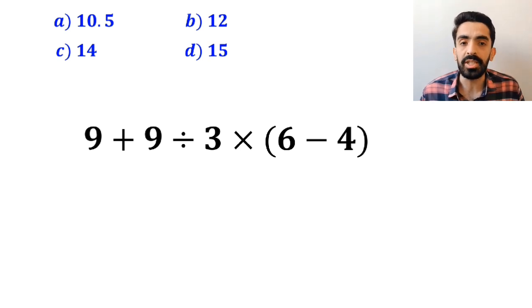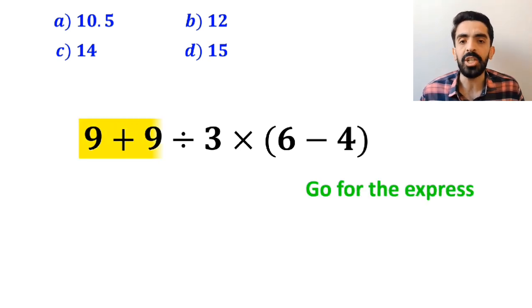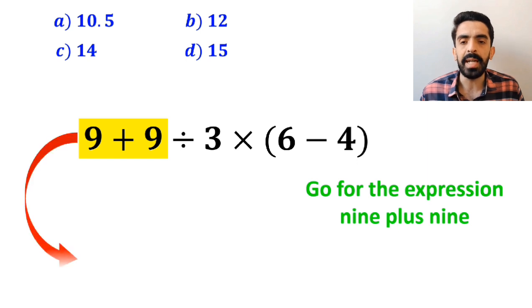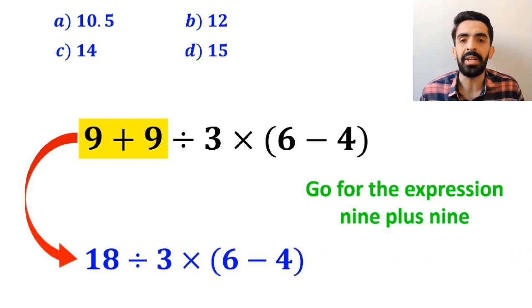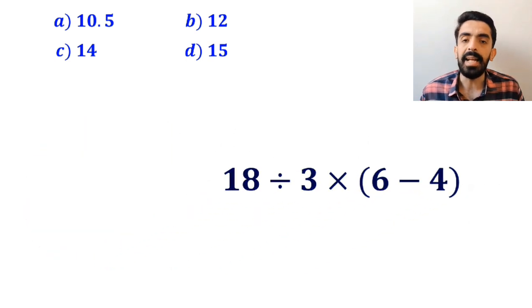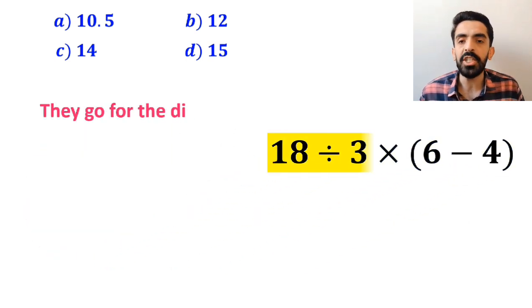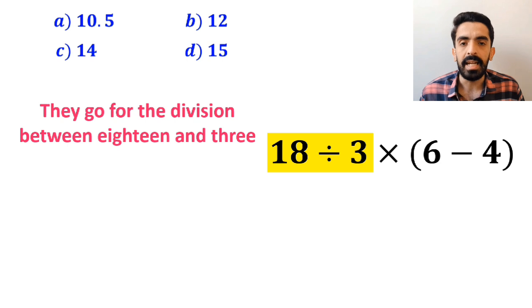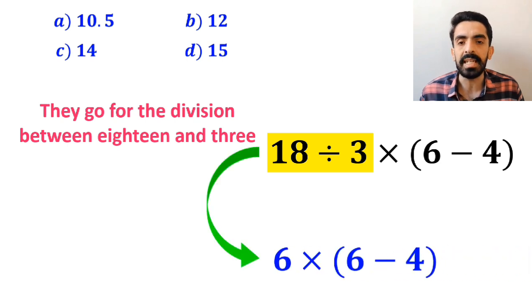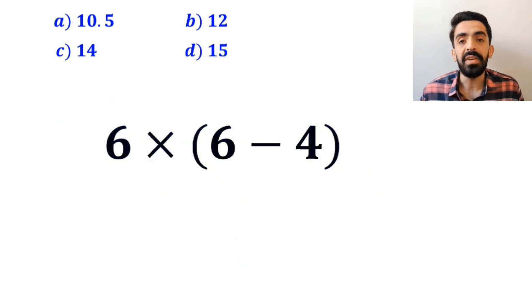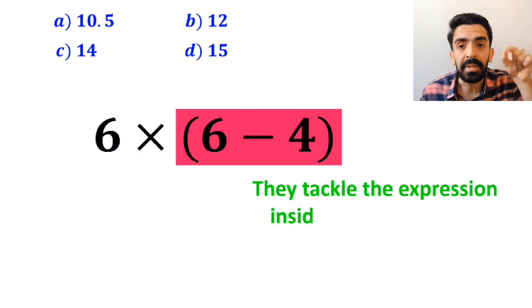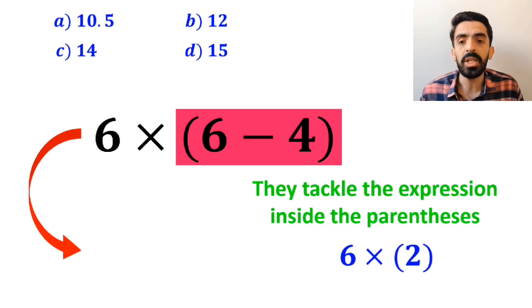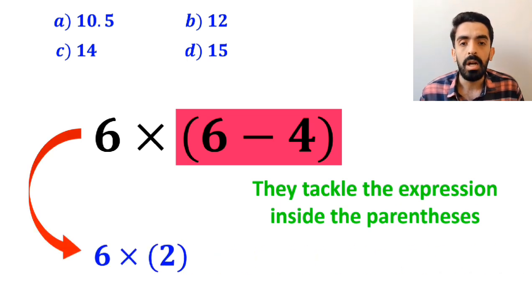Many people, when solving this question, first go for the expression 9 plus 9 and rewrite this expression as 18 divided by 3 times 6 minus 4 inside the parenthesis. In the next step, they go for the division between 18 and 3, and this expression simplifies to 6 multiplied by 6 minus 4 inside the parenthesis. And in the final step, they tackle the expression inside the parenthesis and rewrite it as 6 times 2, which ultimately gives them the answer 12.